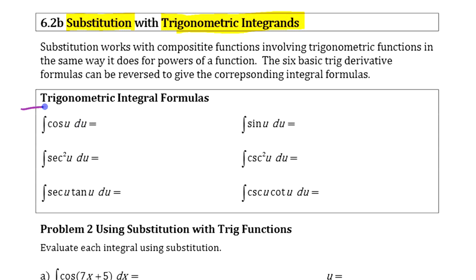Except now we are looking at where this is a function. U is a function. It's going to be not just cosine of a variable, it's going to be cosine of x squared plus 2 or something like that, where that's a function.